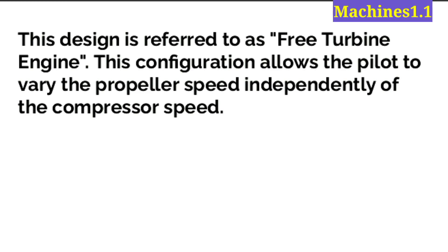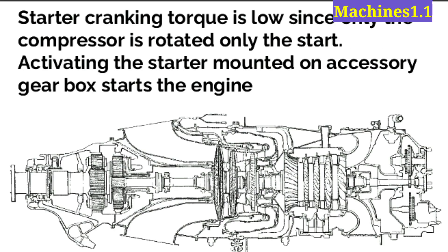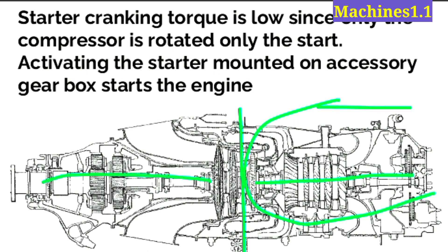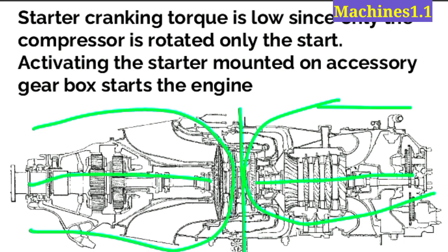This design is referred to as a free turbine engine. This configuration allows the pilot to vary the propeller speed independently of the compressor speed. In this engine, the two shafts are not coupled together directly — all components of one shaft are connected to it, and all components of the second shaft are connected to that. Between these two shafts there is no mechanical linkage of any type — they are only air-coupled. That is why this is called a free turbine engine.